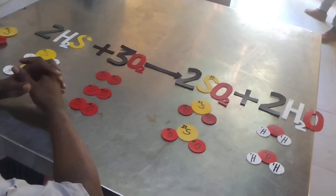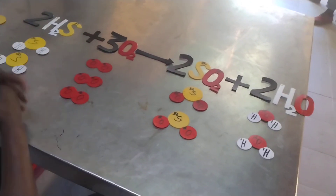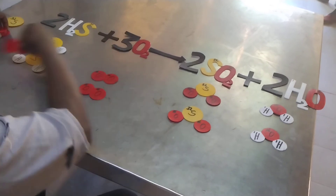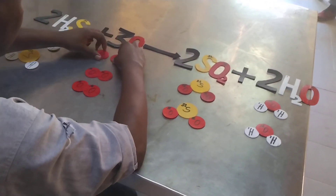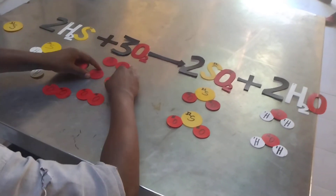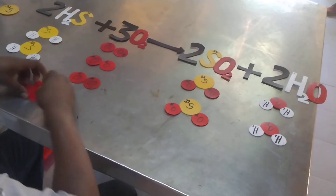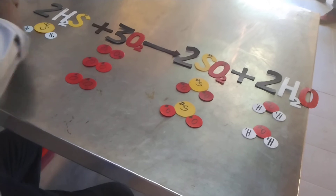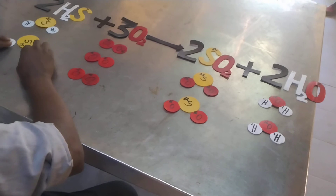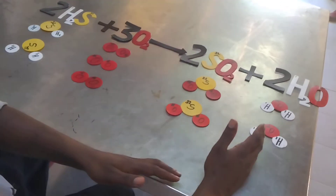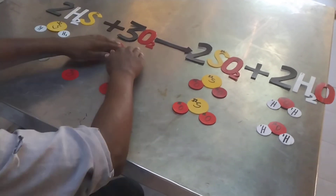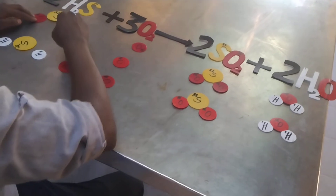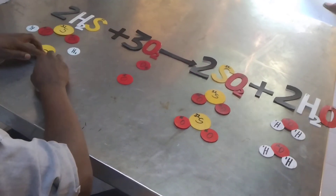Let us now look at the reaction taking place visually. Remember, a reaction is an action. If we replace our reactants with detachable atom models, we can show what happens. For oxygen, we separate the oxygen atoms. For each hydrogen sulfide molecule, we separate the atoms similarly. When the reaction takes place there is bond breakage — the bonds break and two oxygen atoms attach to a sulfur atom to form sulfur dioxide.